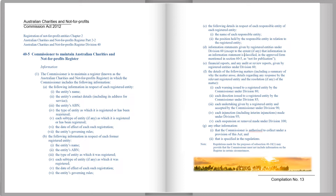For each registered entity: 1. The entity's name. 2. The entity's contact details, including its address for service. 3. The entity's ABN. 4. The type of entity as which it is registered or has been registered. 5. Each subtype of entity, if any, as which it is registered or has been registered. 6. The date of effect of each such registration. 7. The entity's governing rules.